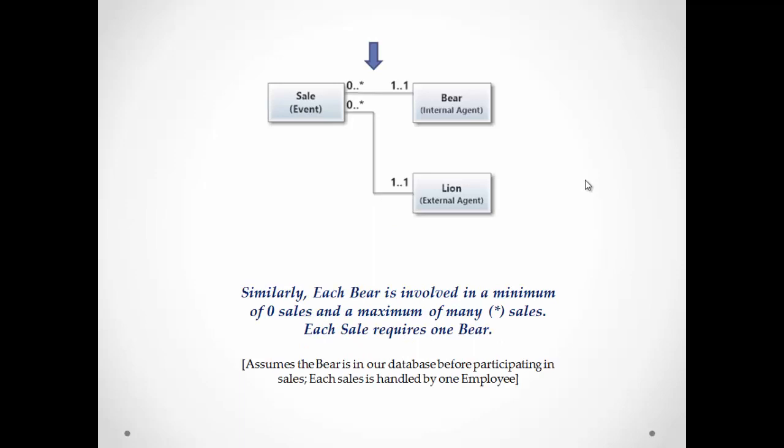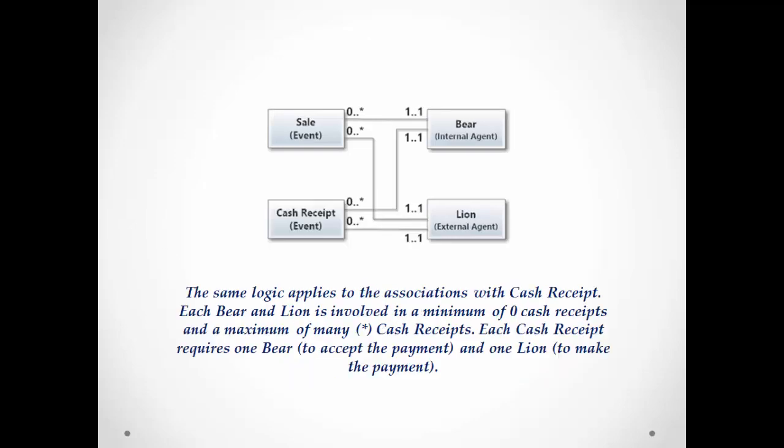Now let's add the bear. In the same way as we had the lion participating in the sale, each bear is involved in a minimum of zero sales and a maximum of many sales. Going the other way, each sale requires one bear to process it — this assumes the bear is in our database before participating in any sales. Each sale is only handled by one employee. If we add the cash receipt event, we have basically the same multiplicities — the same logic applies.